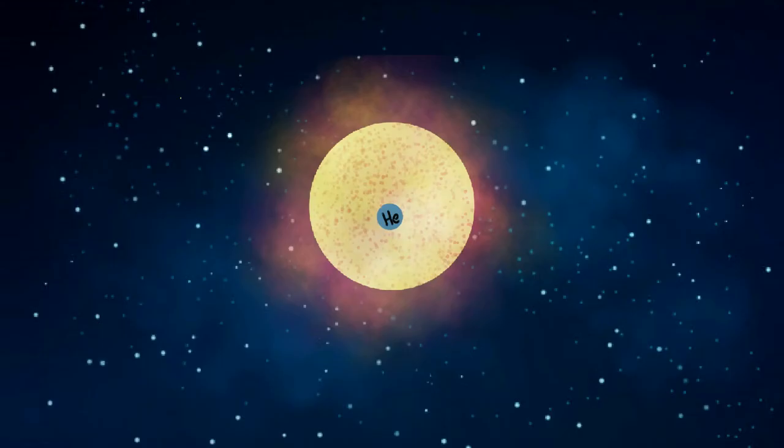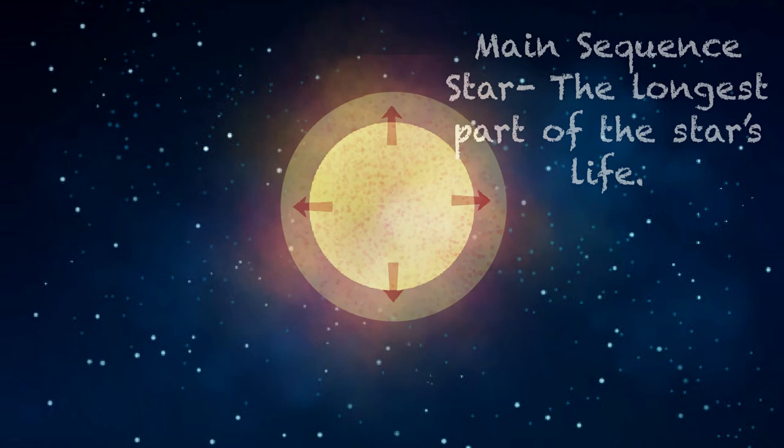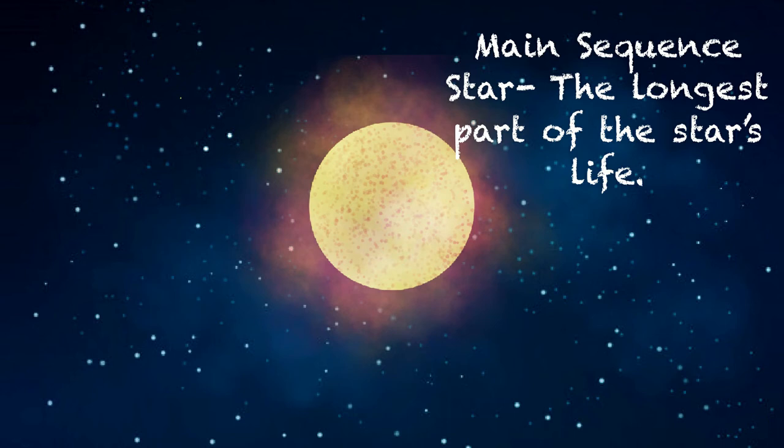It reaches a point where it stabilizes. Its core creates outward pressure which prevents the star from collapsing. This is when the protostar becomes a main sequence star, the longest part of the star's life. About 90% of stars in the universe are main sequence stars.